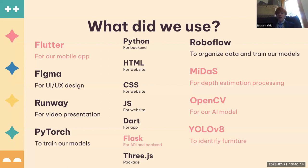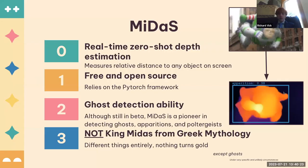Finally, we used MIDAS, which measures relative distance to anything the camera sees. Using MIDAS, our model is not only able to detect objects but also estimate the depth of objects in real time. MIDAS was trained off of PyTorch's neural network. And no, it is not King Midas and it does not turn things into gold.